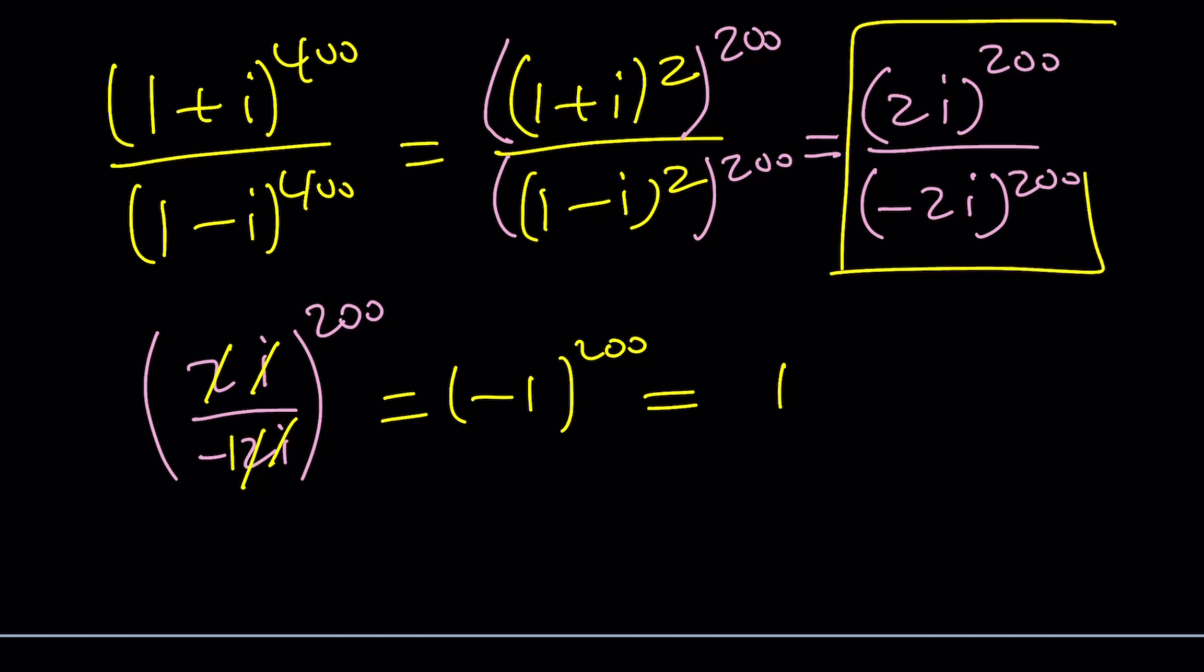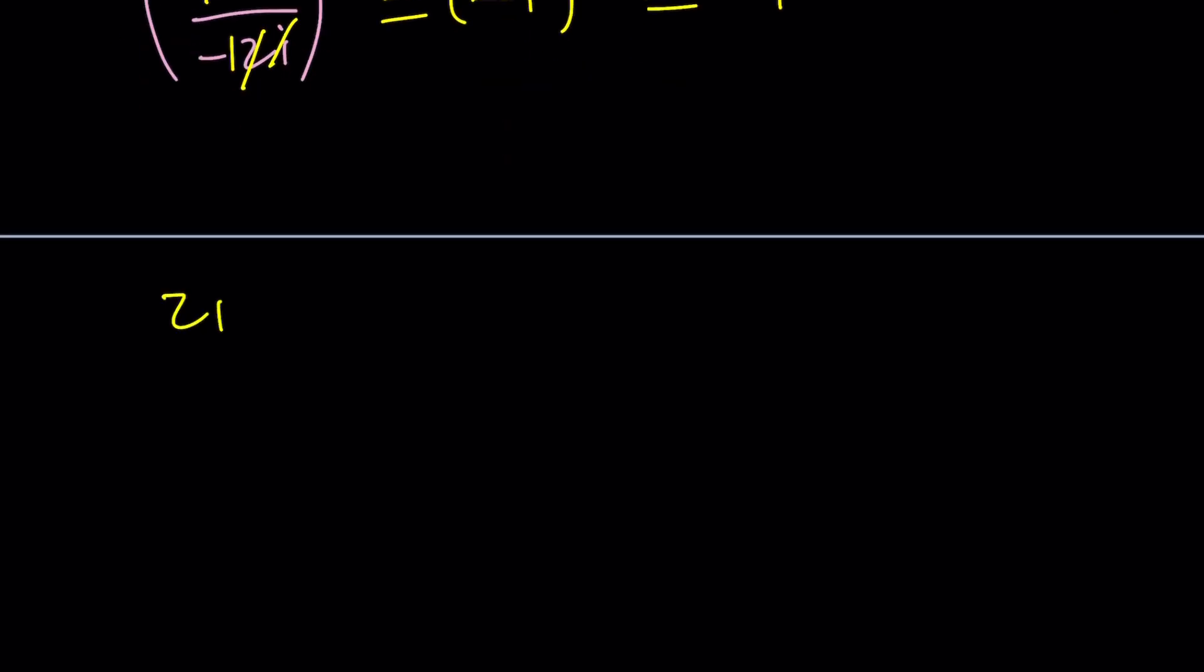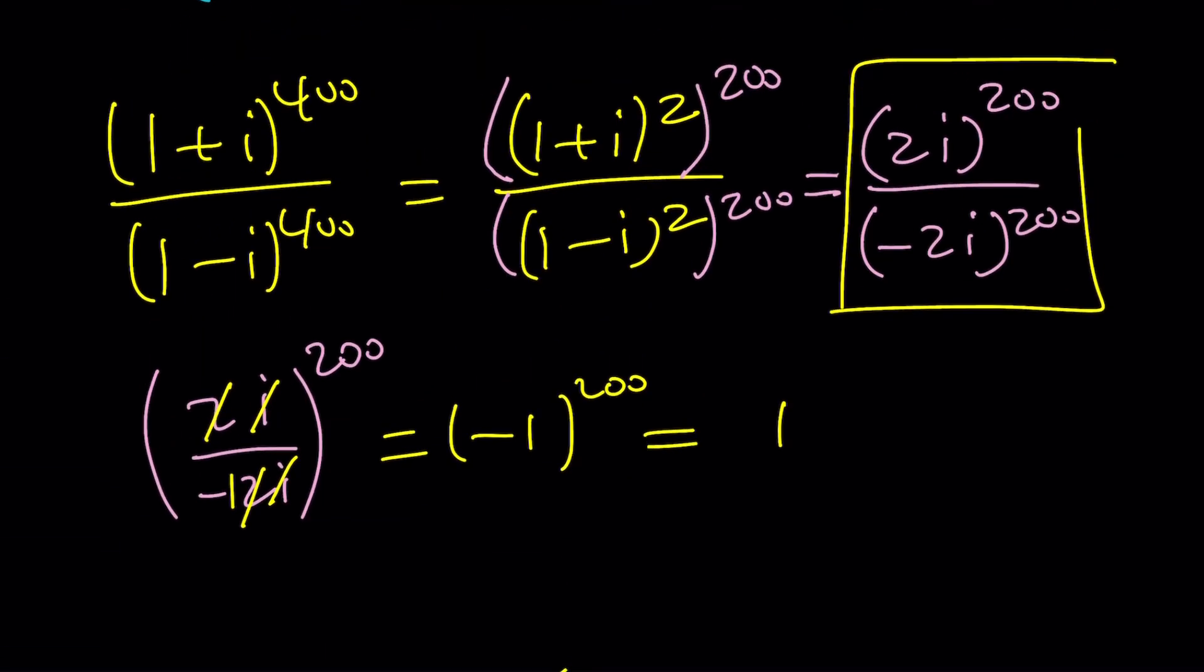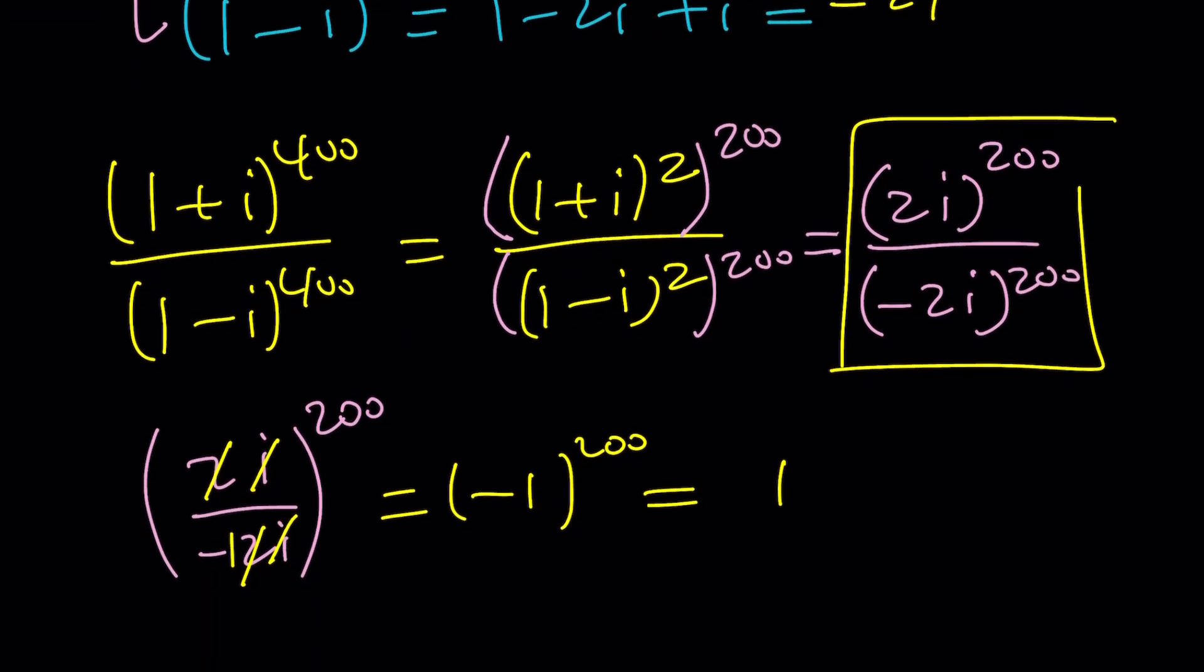Or another alternative method would be take this, right? I want to show you different alternatives so that people can follow whatever they like. So I can kind of raise it to the power like this. 2 to the power 200 times i to the power 200 divided by negative 2 to the power 200 times i to the power 200. And guess what? These two are the same because, again, 200 is even. And these two are the same. Everything cancels out. We end up with 1. So depending on what you like, which is your favorite method, please let us know in the comment section, obviously.